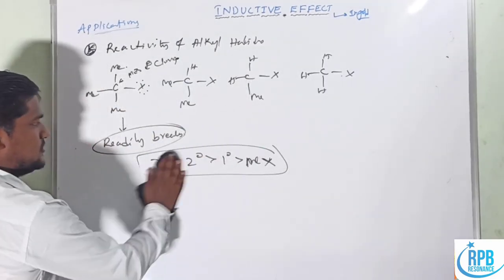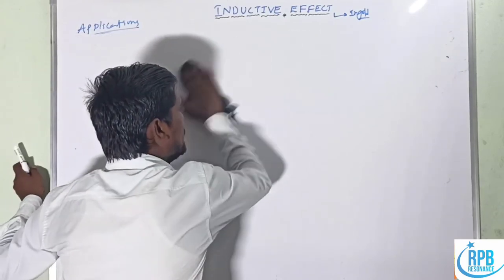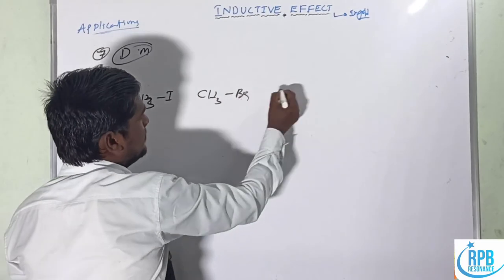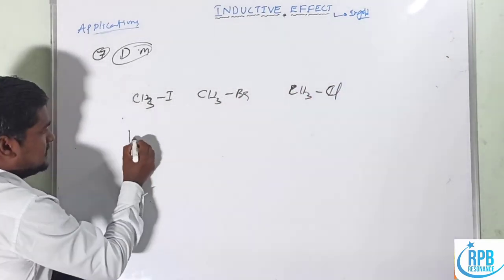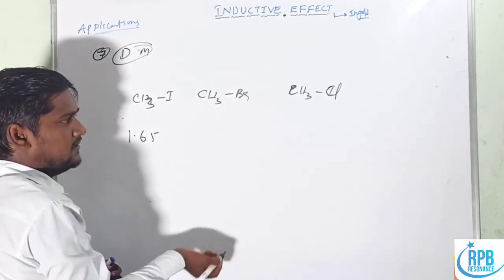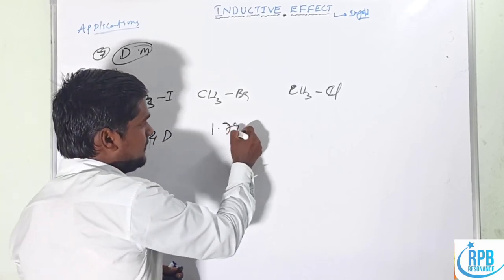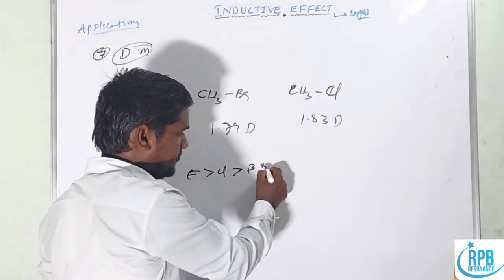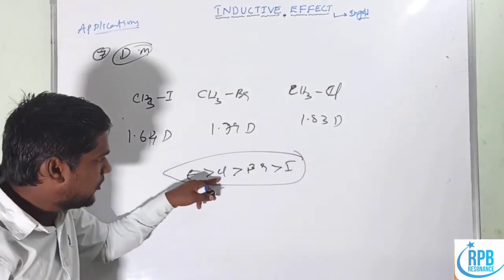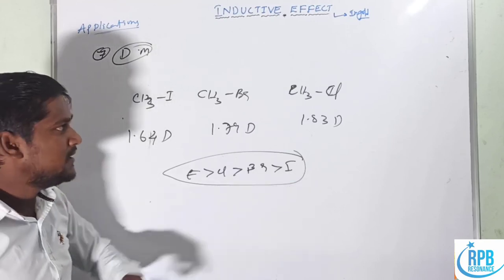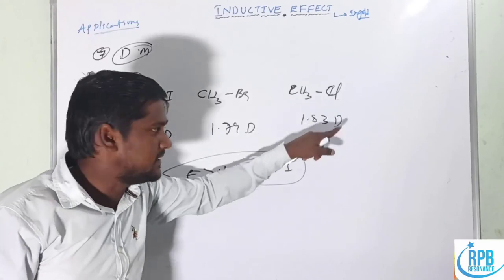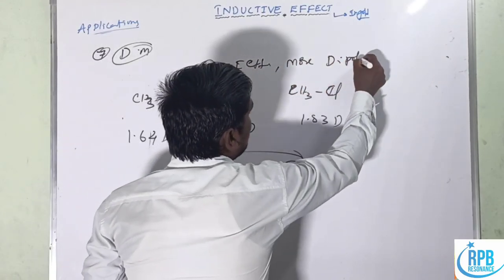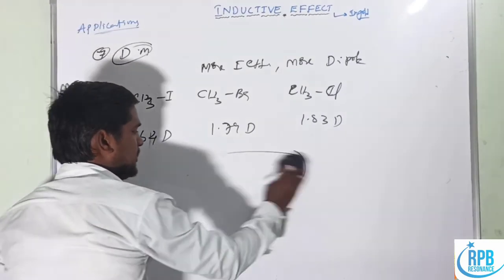The seventh application is dipole moment. For methyl iodide (~1.65), methyl bromide (~1.79), and methyl chloride (~1.83): as the minus I effect increases, the dipole moment also increases. So more inductive effect means more dipole moment.